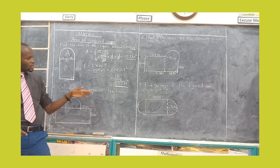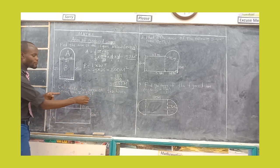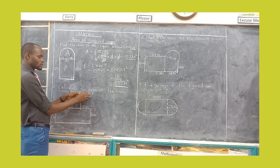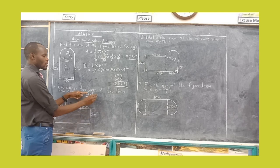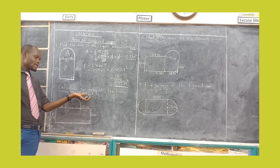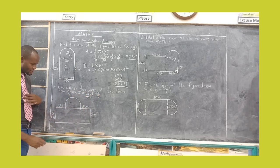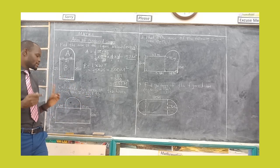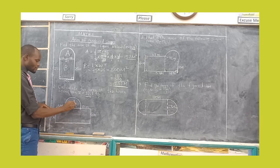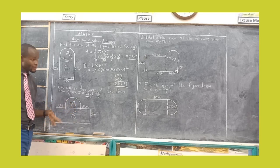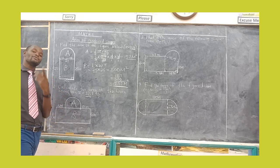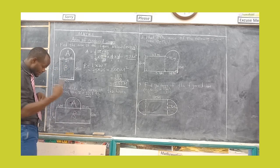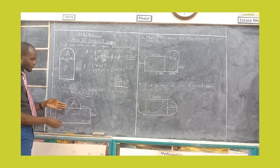Let's go to question number 2. Calculate the area of the figure below. Take pi as 3 and 1 over 7. If you change this to a proper fraction, 7 times 3 equals 21, plus 1 gives 22 over 7. So they mean you take pi as 22 over 7. Our initial step is to identify how many shapes we can get. We have shape A and shape B — a semi-circle and a rectangle. We will get more complicated examples as time goes on.